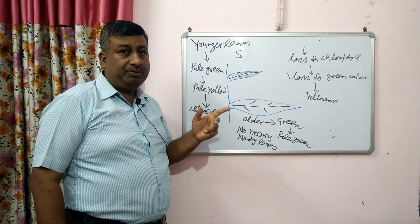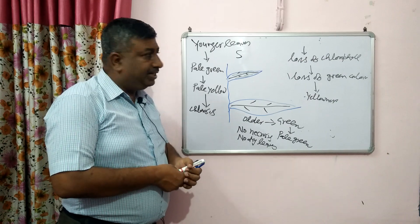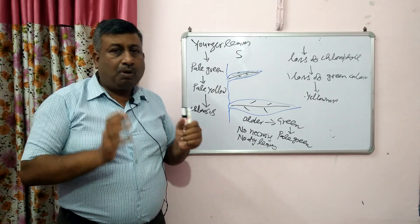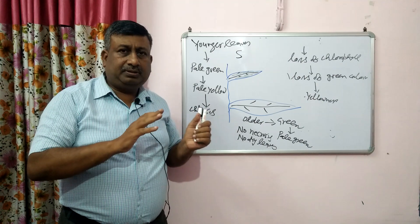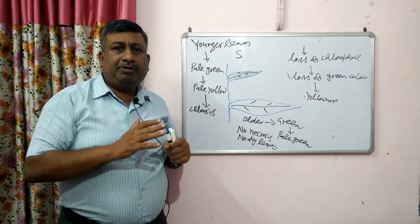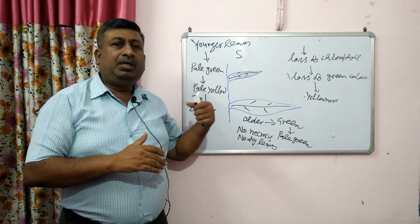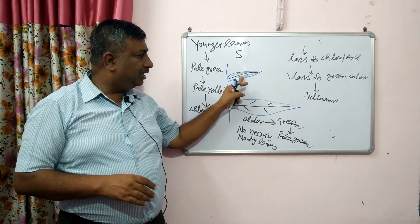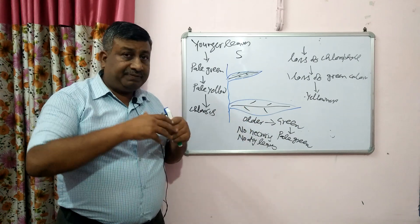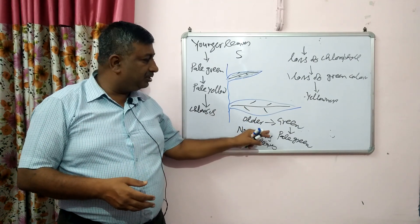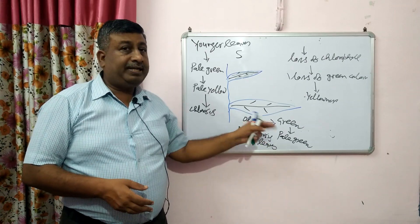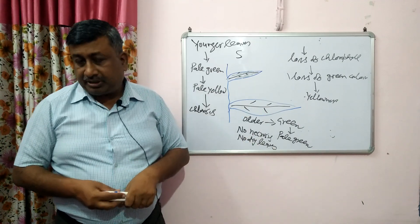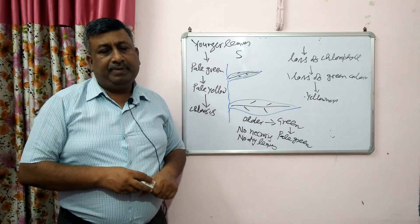In magnesium deficiency, interveinal chlorosis is present with veins remaining green and no dryness. So to summarize the differences between nitrogen, sulfur and magnesium deficiency: the commonality is chlorosis in all three. Nitrogen and magnesium deficiencies appear on older leaves, while sulfur appears on younger leaves. In acute nitrogen deficiency, old leaves become dry; in sulfur there is no necrosis and older leaves only become pale green or pale yellow. These are the key differences between nitrogen, sulfur and magnesium deficiency.